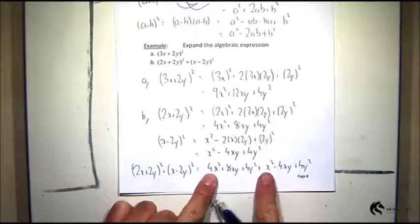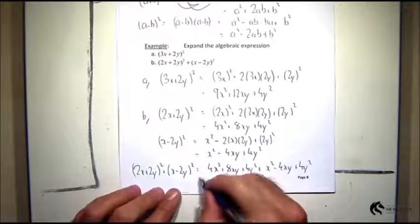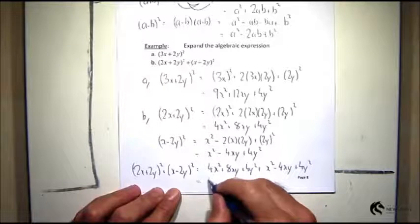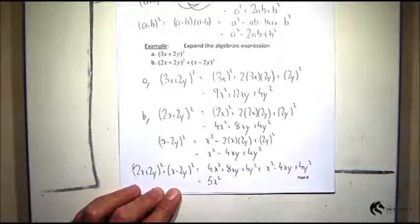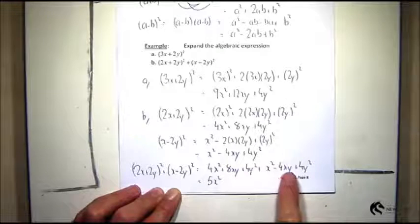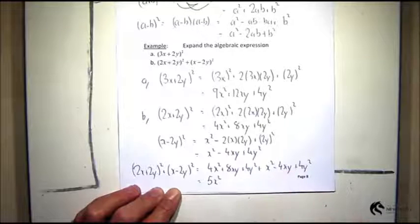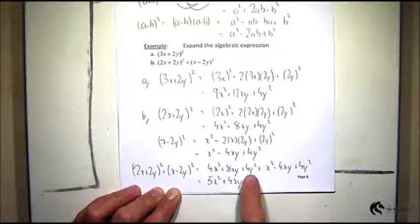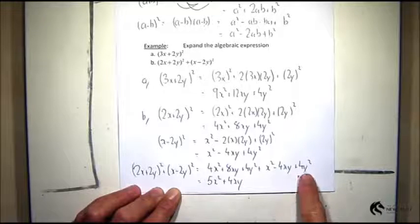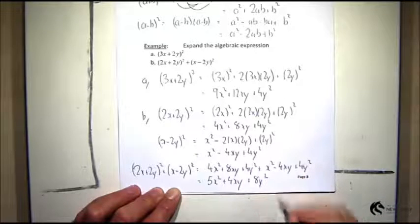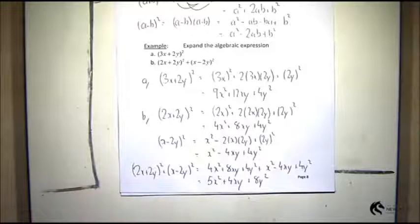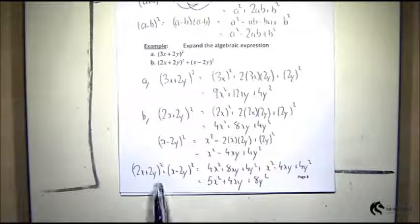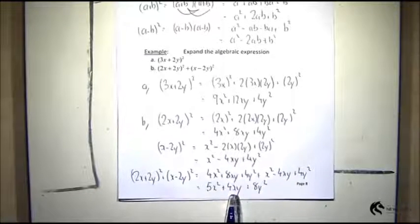So I've got 4x² plus x² will give me, there's no others, so that's 5x². I've got 8xy minus 4xy, so that will leave me with just 4xy. And then I've got 4y² plus 4y² will give me 8y². And so this number and this number are the same thing.